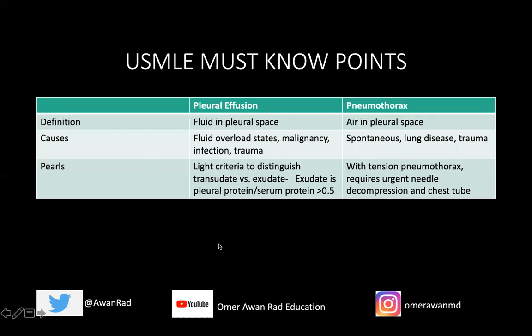In summary, a pleural effusion is when you have fluid in the pleural space, typically seen in fluid overload states, malignancy, infection, and trauma. Always use Light's criteria to differentiate a transudative versus an exudative effusion. A pneumothorax is when you have air in the pleural space — it can occur spontaneously from rupture of a bleb, from lung disease like emphysema, or from trauma. With a tension pneumothorax, which is a surgical emergency, you need urgent needle decompression and a chest tube.